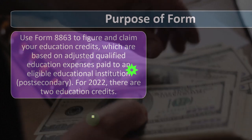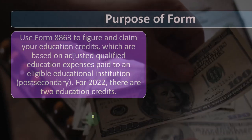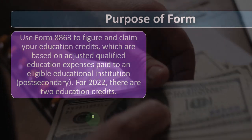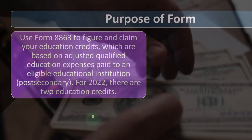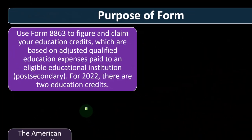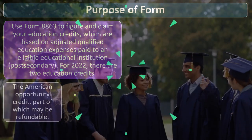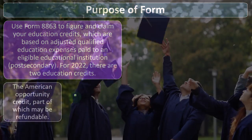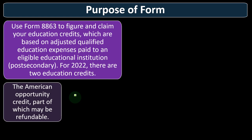Purpose of Form 8863: use it to figure and claim your education credits, which are based on adjusted qualified education expenses paid to an eligible educational institution — post-secondary. For 2022, there are two education credits. The general rule of income tax is that you would get to deduct things needed to help generate revenue, but the tax code also has incentives in the form of deductions or credits, with education being one of those areas.